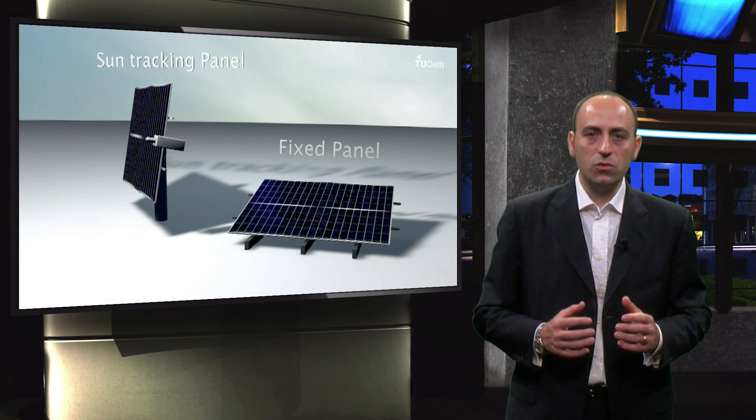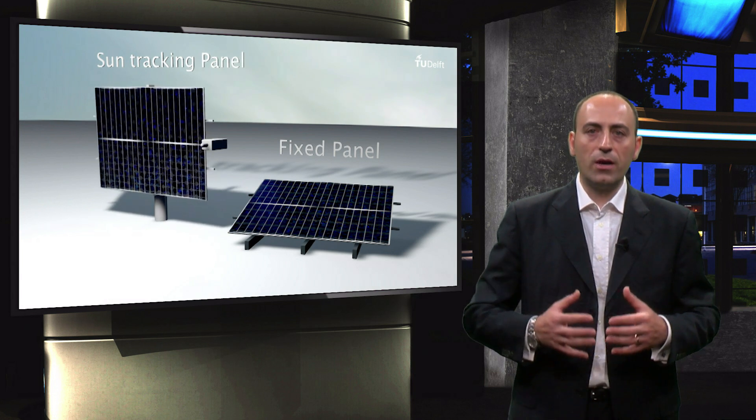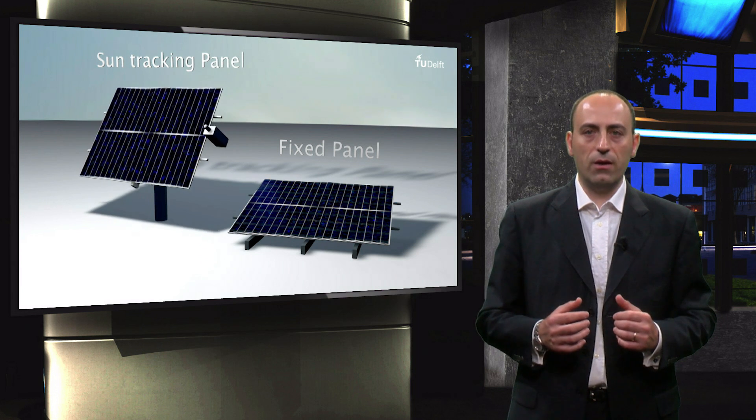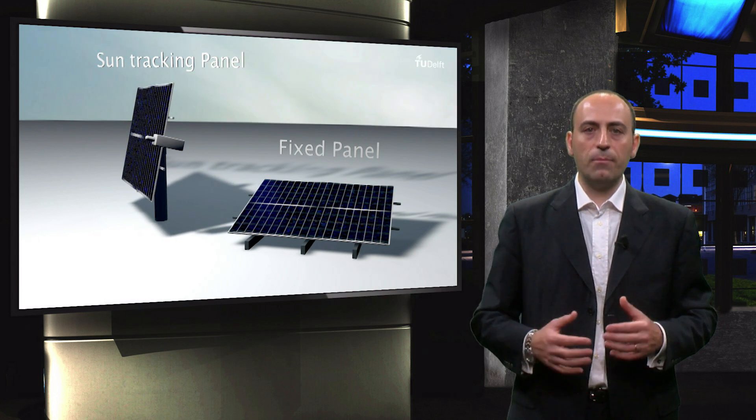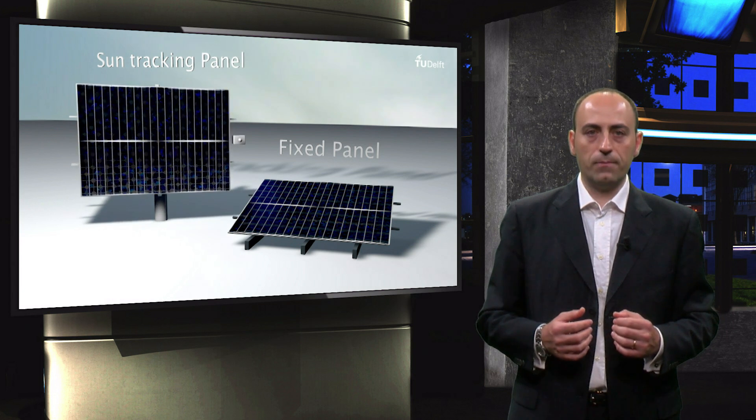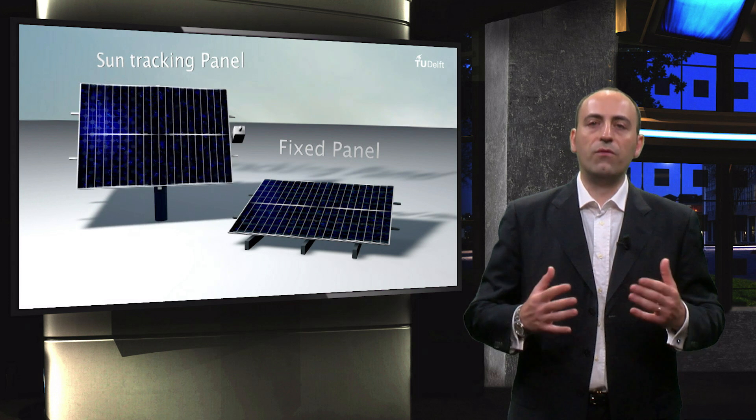One possibility is to use a fixed panel where you can choose the tilt angle and maybe adjust it a few times during the year. Alternatively, a mechanical tracking panel configuration could be used that follows the sun during the day. This will be the topic of next video.